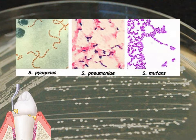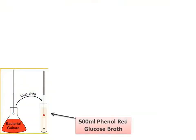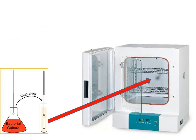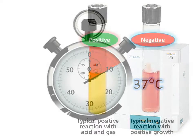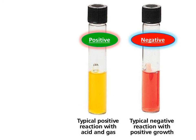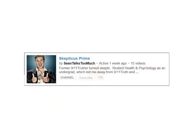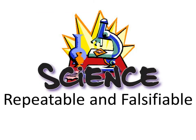I could scrape some plaque from my teeth and grow the bacteria on an agar plate, then do a gram stain to make sure I have the right microorganism. Once that's established, I would inoculate 500 milliliters of phenyl red glucose broth with about 0.5 microliters of sodium fluoride, simulating the one part per million levels found in most fluoridated water. I would then incubate the broth at 37 degrees Celsius for 48 hours and see if any fermentation occurred. I should also inoculate a broth without fluoride and use that as a control. The point I'm trying to make is that real science is repeatable.